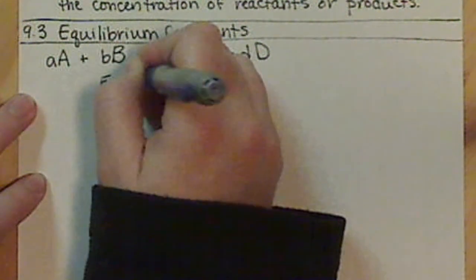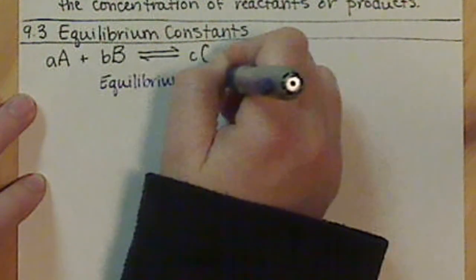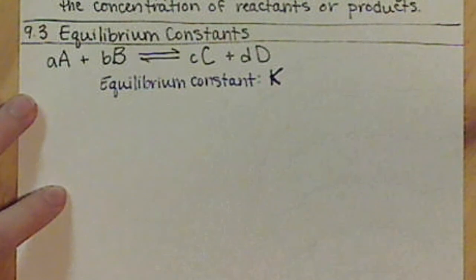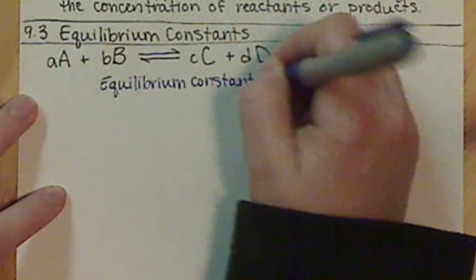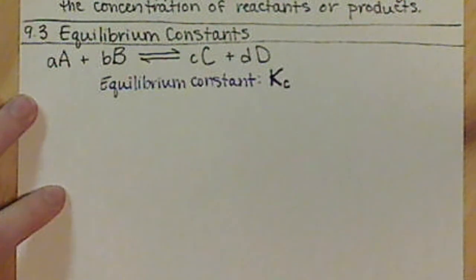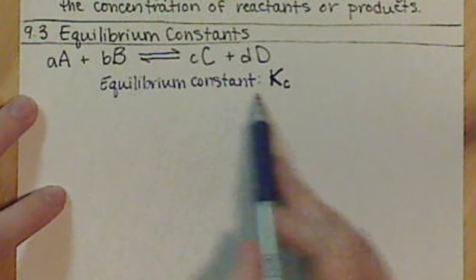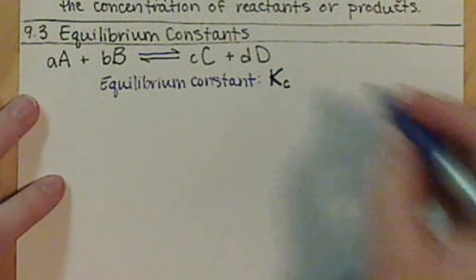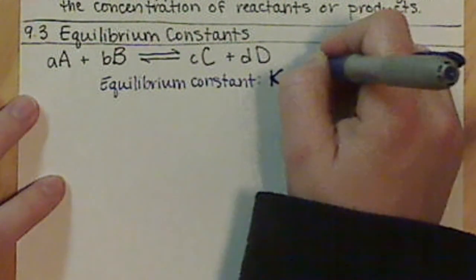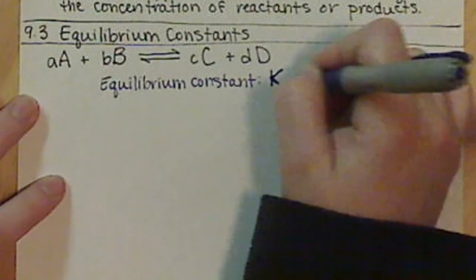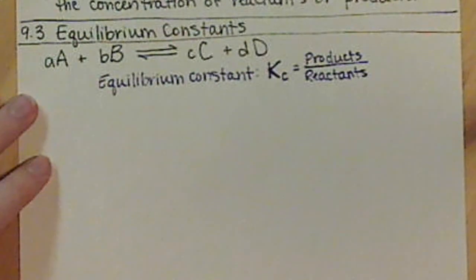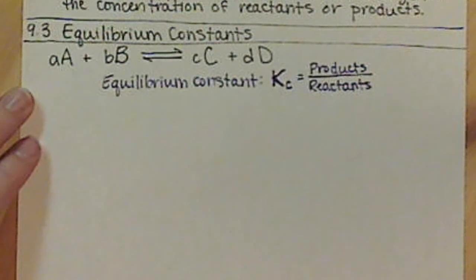So our equilibrium constant gets the symbol of capital K. Remember, capitalization is very important in chemistry. So this is a capital K with a subscript of a lowercase c. There are actually a lot of different equilibrium constants, so this letter here can change. But most of the time, we're going to be dealing with Kc. In general, what this is going to be equal to is our products over our reactants, and we're going to be using our equilibrium constants in order to look at concentrations.